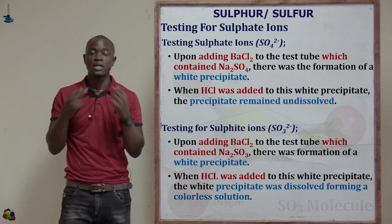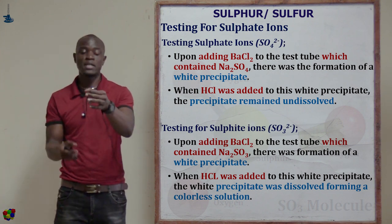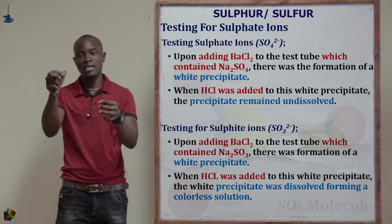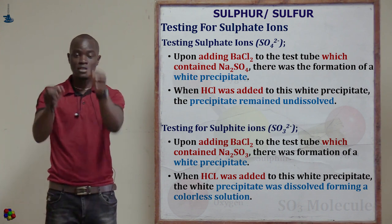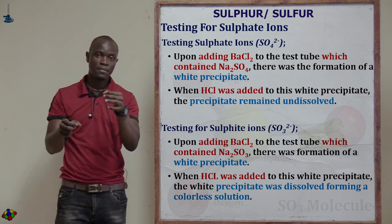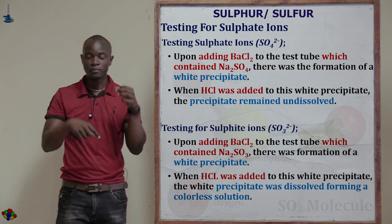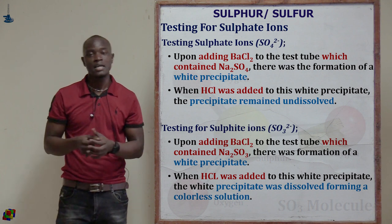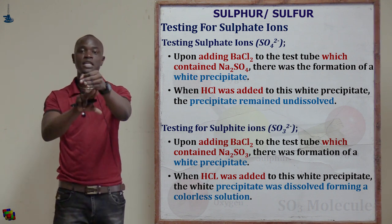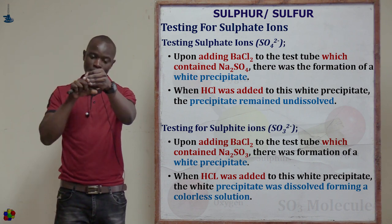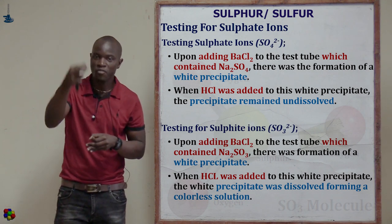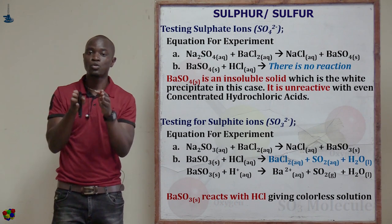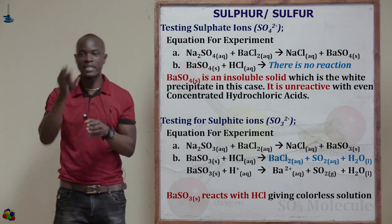So the procedures work as follows: in one test tube we added sodium sulfate, in another we added sodium sulfite. We then added barium chloride to both — both formed a white precipitate. Then we added hydrochloric acid to both. The test tube with sodium sulfate gave a white precipitate that persisted, while the test tube with sodium sulfite gave a white precipitate that dissolved. Those are the two ways to differentiate between sulfate and sulfite ions.